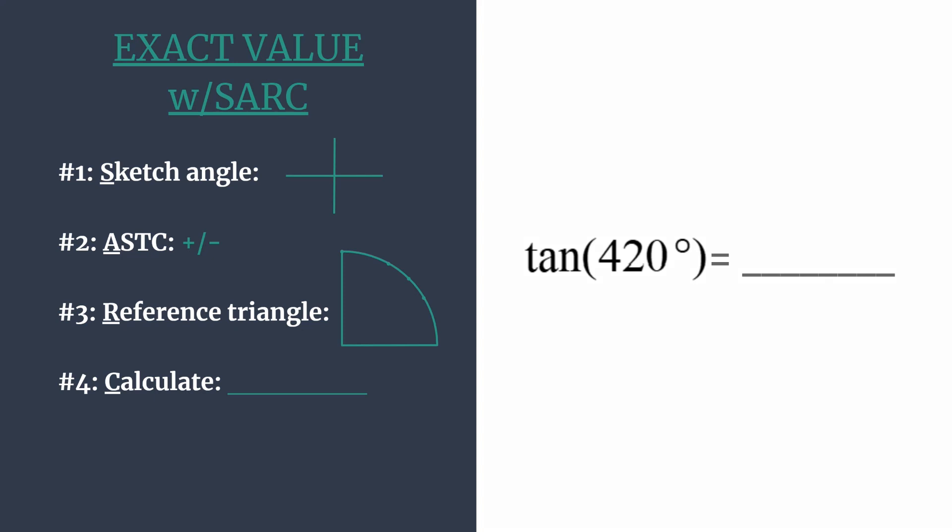Okay first we want to sketch the angle and notice we have a positive angle so we're rotating counterclockwise and also notice that 420 is more than one rotation. That's 360 degrees and so it's going to help us to find a coterminal angle and to do that simply subtract 360 from 420.